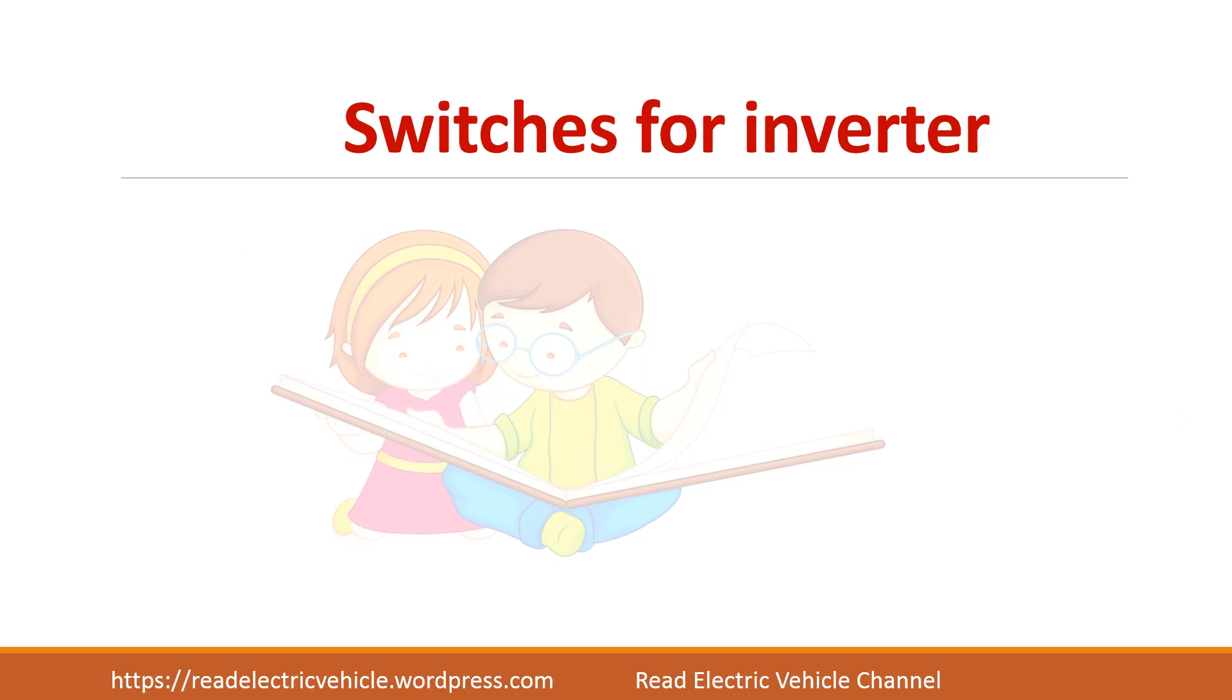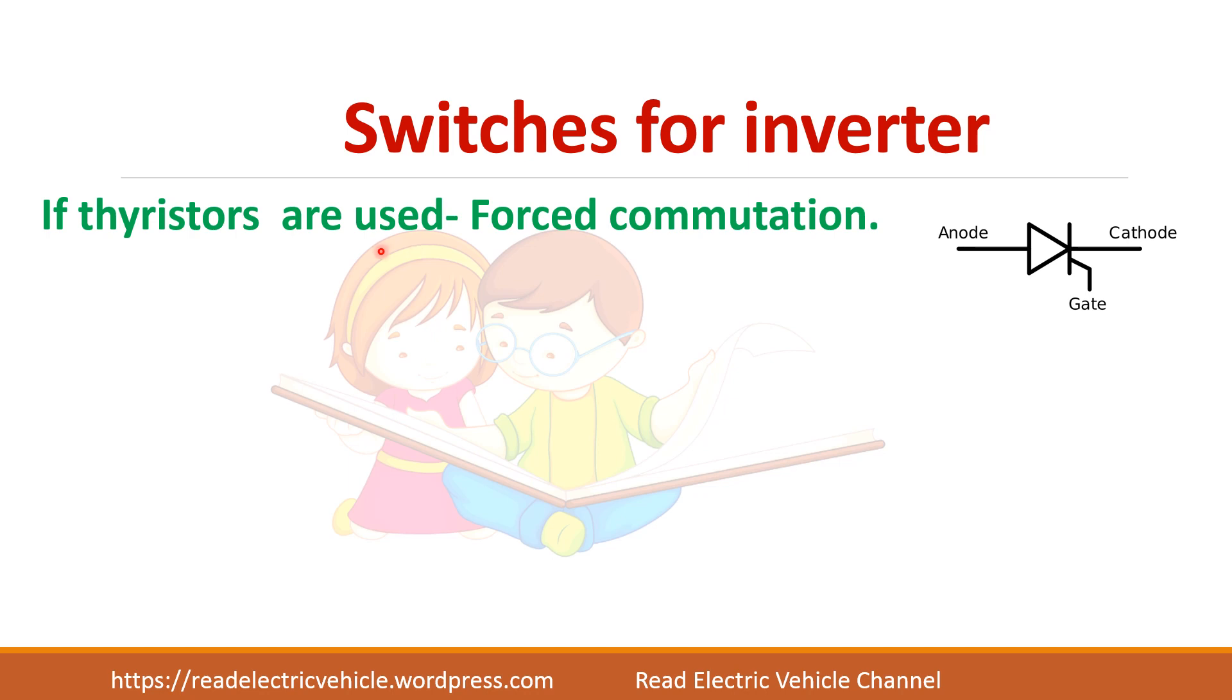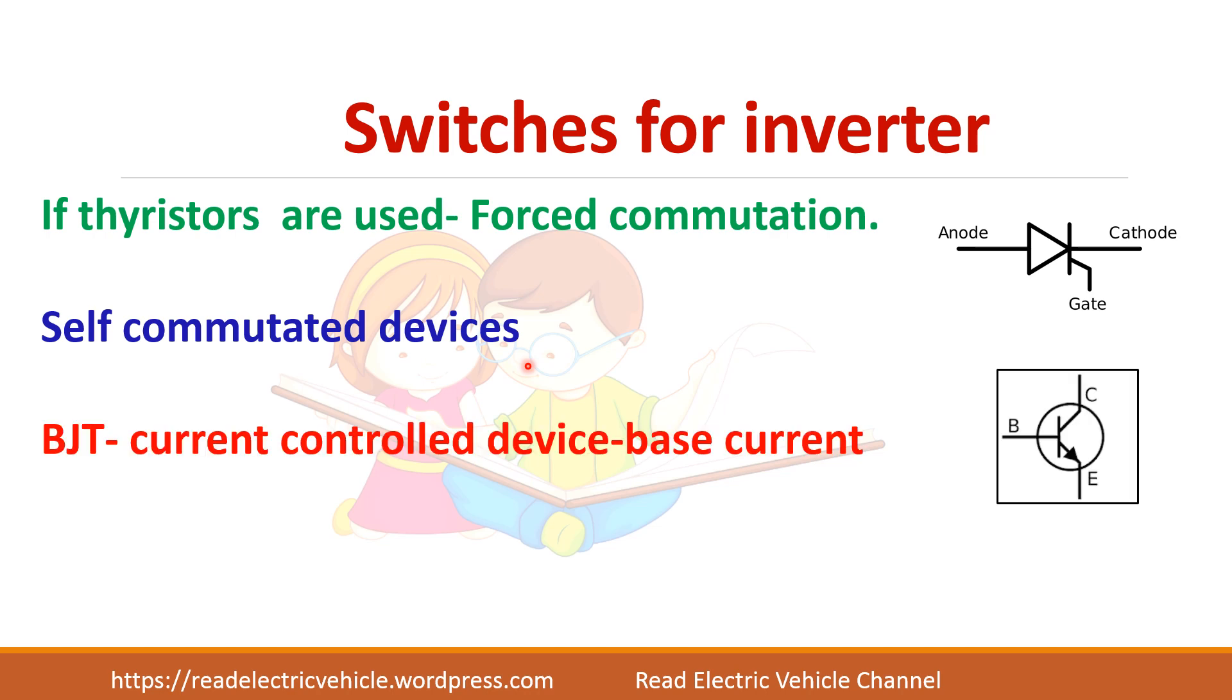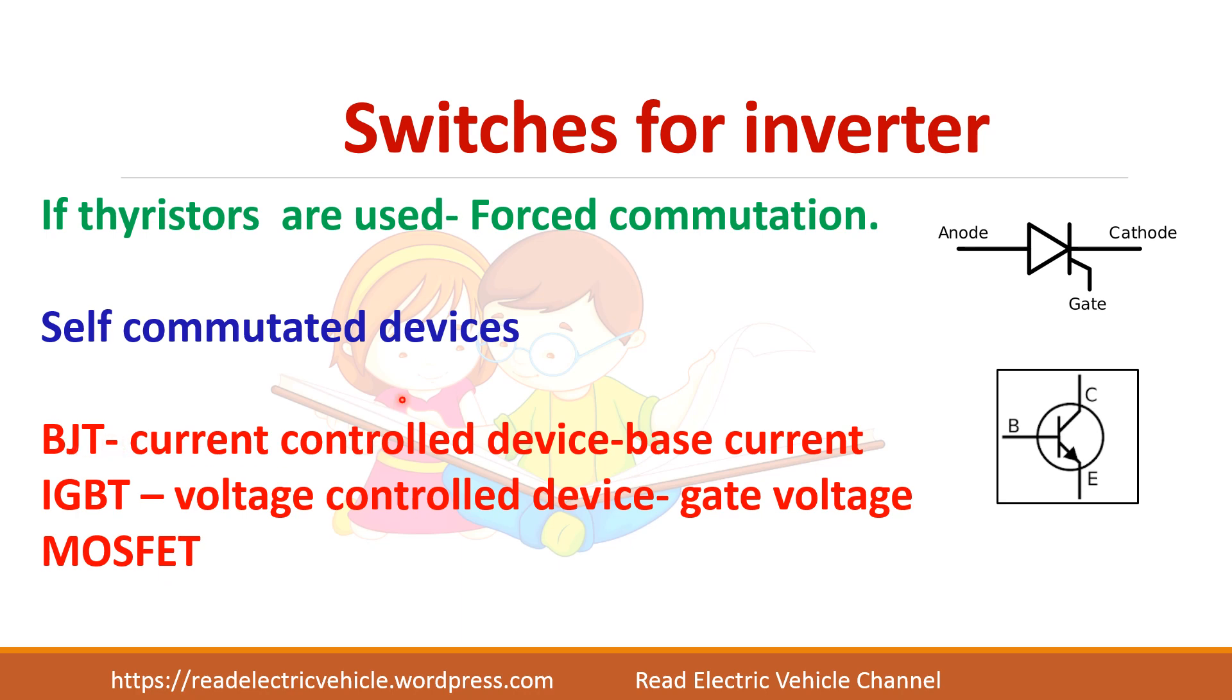If you see the switches for inverter, thyristors can be used but thyristors cannot be turned off easily, so you have to use forced commutation. Then we can use self commutated devices like BJT, IGBT or MOSFET. In BJT it is a current controlled device, so you have to give base current and if you remove the base current it gets turned off. IGBT and MOSFET are voltage controlled devices, so if you remove the gate voltage both the devices will get turned off easily. Depending upon your requirement, if you need high frequency application or high power application you can choose a particular device. The thyristors are mostly preferred for very high power applications.